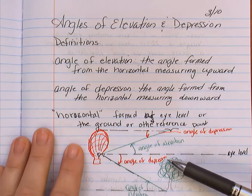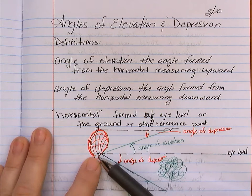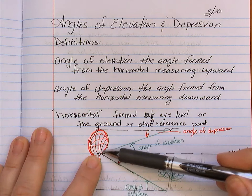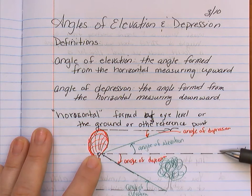So here's a picture. If I'm looking from the person's point of view and I'm looking up at the bird, this is the angle of elevation. And the horizontal is right here, which is the line of sight.